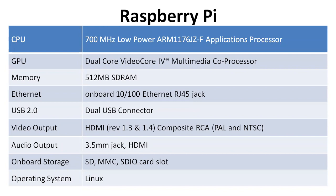The Raspberry Pi CPU is a 700 MHz low-power ARM application processor. The GPU is a dual-core VideoCore multimedia processor. The memory size is 512 MB SRAM — though nowadays 1 GB RAM is commonly used.